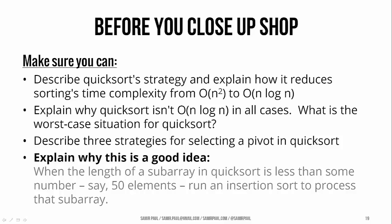Now, finally, here's an idea to chew on a little bit. When you're sorting an array in quicksort, if the length gets to be less than some number, you know, pick 50 numbers out of a hat, use an insertion sort to get the rest of the way there to process the subarray. Why might that be a good idea? Think on it for a bit. And that's it for today.